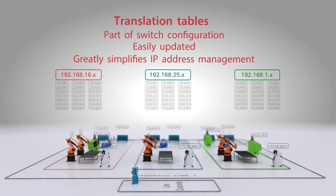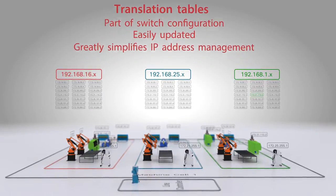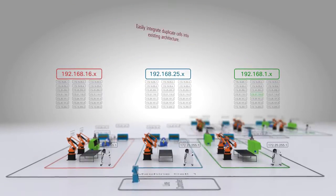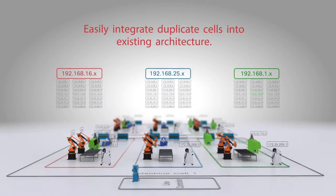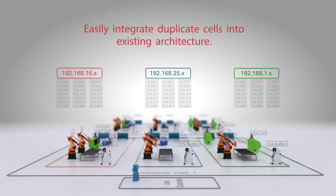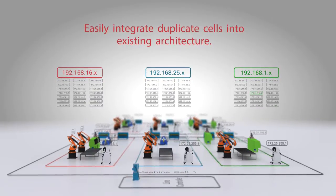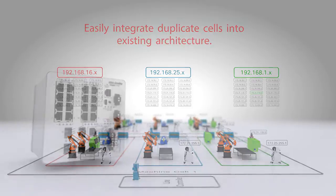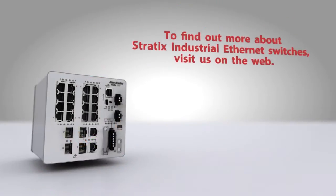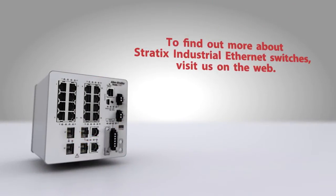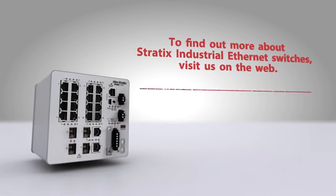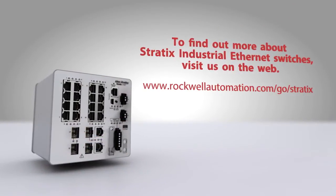This solution also allows duplicate cells to be easily integrated into existing architectures and systems without changing your PLC or HMI code. To find out more about Stratix industrial Ethernet switches, visit us on the web.